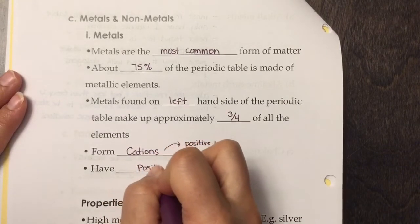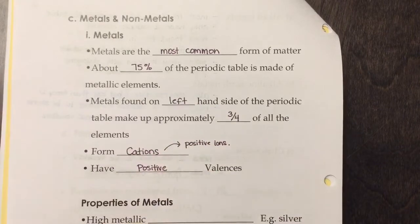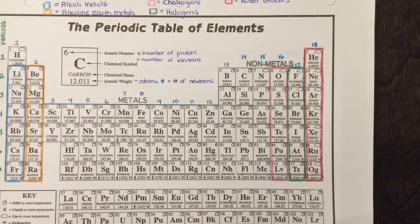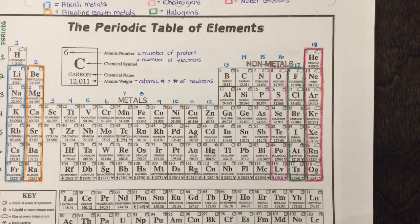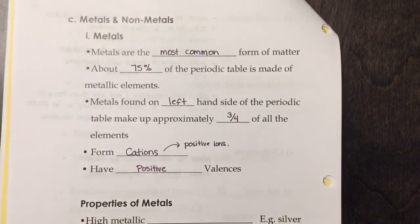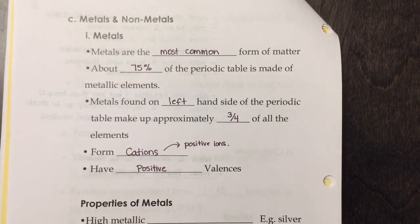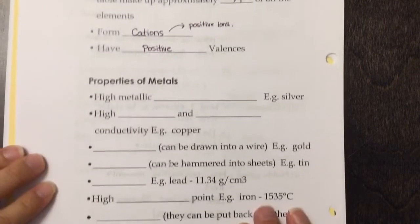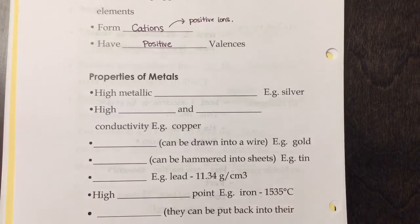Take out your periodic table and we're going to color in all of the metals. Actually, we'll do that at the end. We'll come back to that, but you'll need three pencil crayons for that. So here are the properties of metals next.